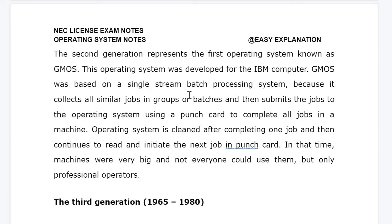GMOS was based on a single stream batch processing system. This means it collected all similar jobs in groups or batches. For example, mathematical calculations of one type were collected in a group or batch, and then the job was submitted to the operating system using a punch card to complete all jobs in the machine. They used to submit jobs using punch cards containing all similar kinds of jobs. The operating system was cleaned after completing one job, and then it continued to read and initiate the next job in the punch card.